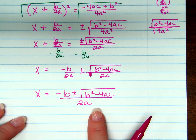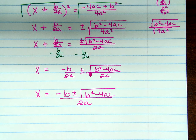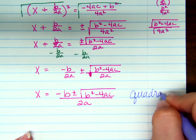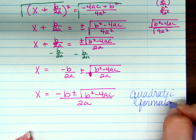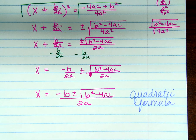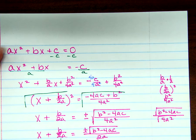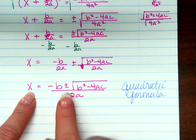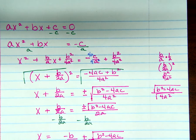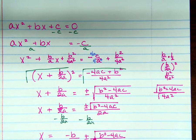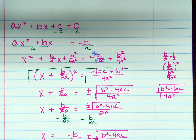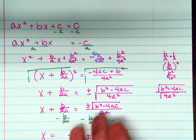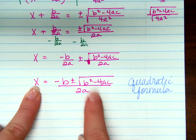Have you ever seen that before? Yes. You worked with it a lot in Algebra 1. Do you remember what it's called? The quadratic formula. I wanted you to see where the quadratic formula came from. It's not just some random formula — they took the standard form of a quadratic and completed the square to solve for x. That's how we can use this formula to solve for x, because it comes straight from standard form of a quadratic.